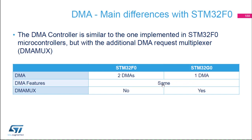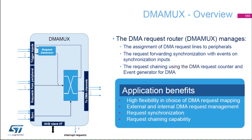The DMA features are the same, but the main difference is that the G0 embeds a DMA-MUX whereas the F0 doesn't. The DMA-MUX request multiplexer allows routing a DMA request line between STM32 G0 peripherals and its DMA controllers. The routing function is ensured by a programmable multichannel DMA request line multiplexer. Each channel selects a unique DMA request line unconditionally or synchronously with events from its DMA-MUX synchronization inputs.